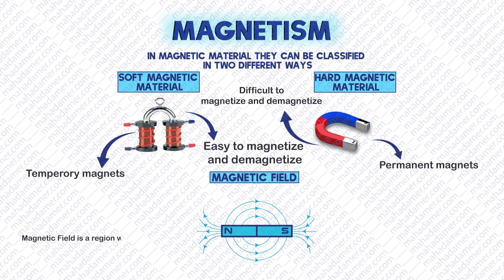Magnetic field is a region where a magnet or a magnetic material experiences a force. They are always in a direction from North Pole to South Pole.